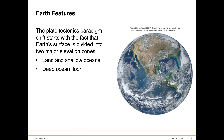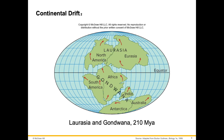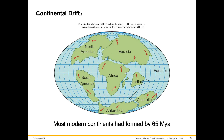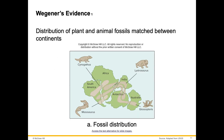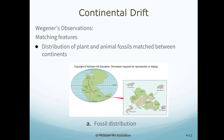Continental drift: most modern continents had formed by 65 million years ago. Wegener's alternative paradigm is that continental drift is actually occurring, where the continents have occupied different locations on Earth's surface in the geologic past. For instance, 250 million years ago the continents were all together in a supercontinent called Pangaea. The continents drifted across the surface of the Earth to their present locations, and they're actually still drifting. Wegener observed that there were matching features of the different continents — notice here how this is Pangaea all together, and you can see Africa and how South America fits in, and Australia fits in there.